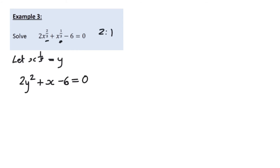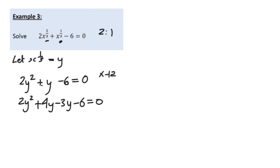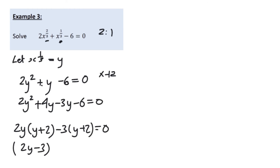To solve this, multiply the leading coefficient by the constant to get minus 12, then find two numbers that multiply to minus 12 and add to plus 1. Splitting the middle term gives: 2y squared plus 4y minus 3y minus 6 equals 0.